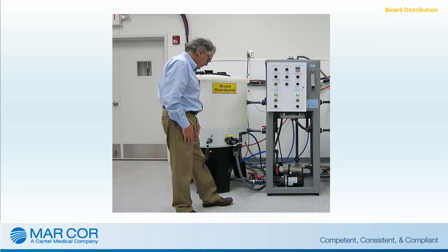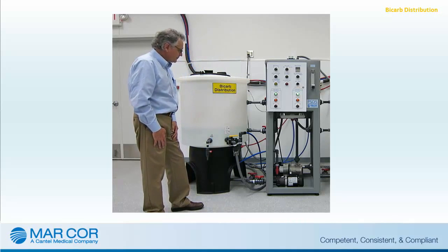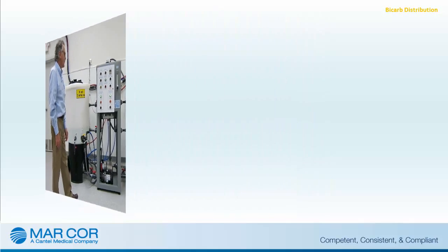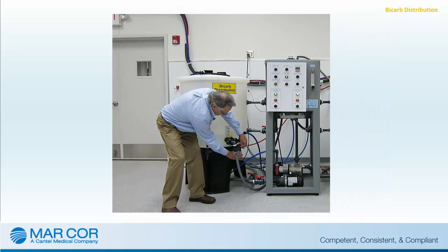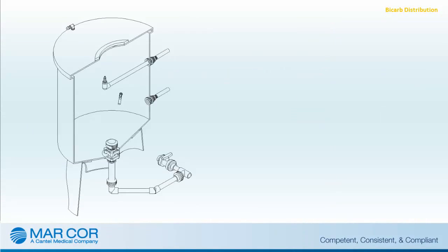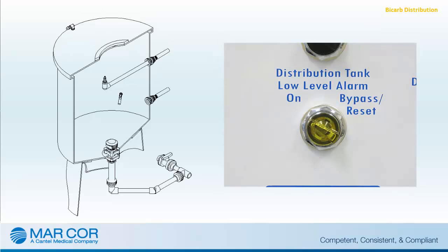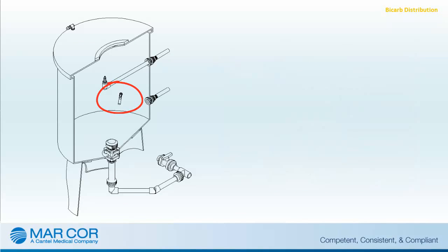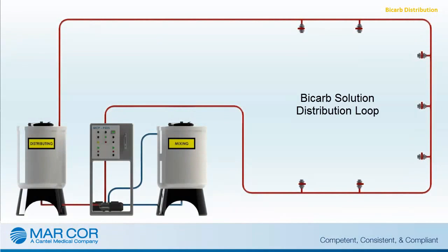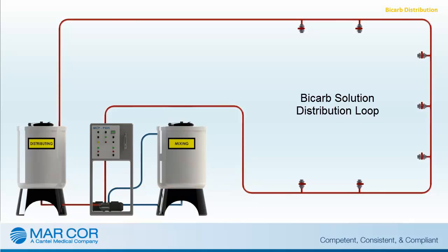Ensure that the bicarb solution has been tested and is ready for use, and the distribution loop ports are ready for normal operation. The distribution pump will be used to pump the bicarb solution from the distribution tank to points of use in the bicarb loop. The end of the loop will return back to the distribution tank. The distribution tank does have a low-level alarm that will activate if the level of bicarb falls below the low-level switch. An adequate supply of bicarbonate solution must be constantly available during distribution operations. Refill the distribution tank from the mixed tank as necessary and make additional batches of bicarb as necessary. Monitor the distribution tank periodically throughout the day. An audible alarm will sound to alert the operator when the distribution tank is low.